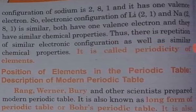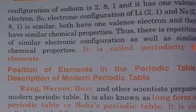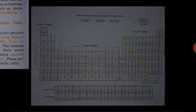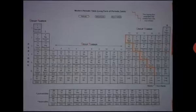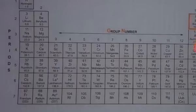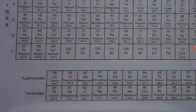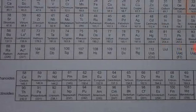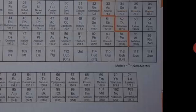The atomic number of neon is 10 and its electronic configuration is 2,8. The next element has atomic number 11, which is sodium, and its electronic configuration is 2,8,1 — it has one valence electron. So the electronic configuration of lithium and sodium is similar; both have one valence electron and similar chemical properties. This type of repetition in electronic configuration is called the periodicity of elements. The modern periodic table was prepared by scientists Rang, Warner, Berry, and others and is known as the long form of the periodic table or Bohr's periodic table. It is also called the extended form of the periodic table.